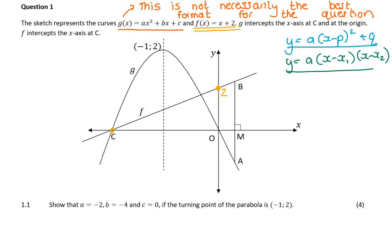Then it says g intercepts the x-axis at c and at the origin, so they've given me a point on the graph that is (0, 0). And f also intercepts the x-axis at c. So this is actually at c, a point of intersection.